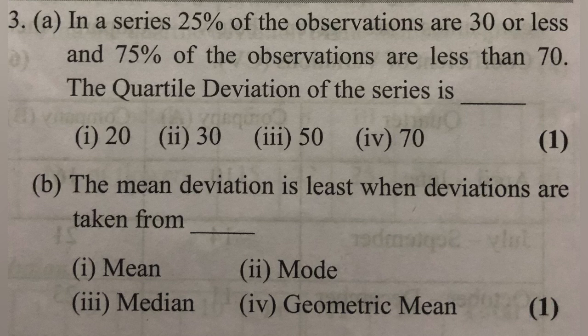In this series, 25% of observations are less than or equal to 70. 75% of observations are less than 70. 70% of observations are less than 70. The formula is Q3 minus Q1 divided by 2.